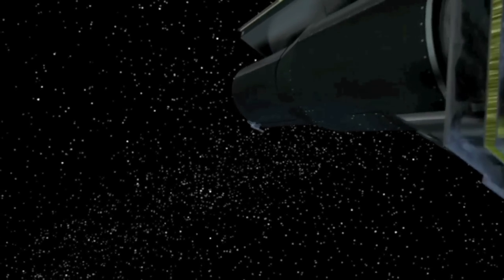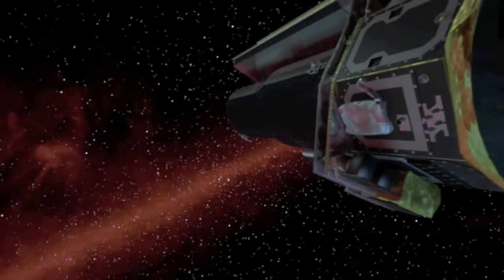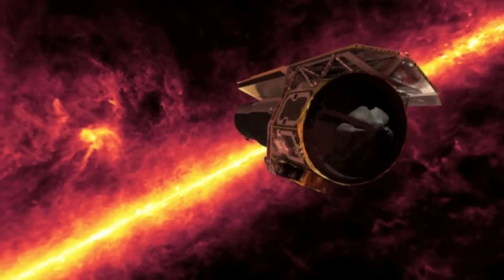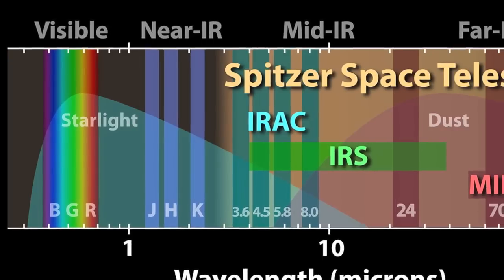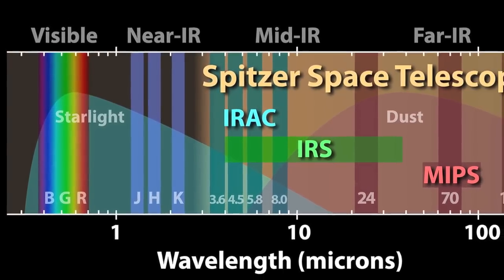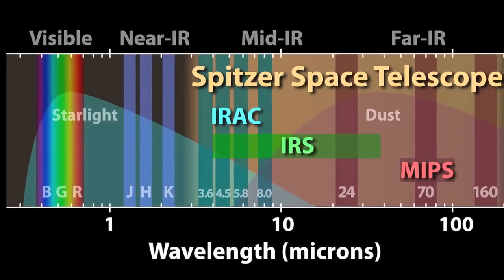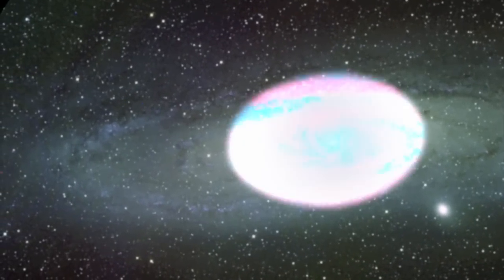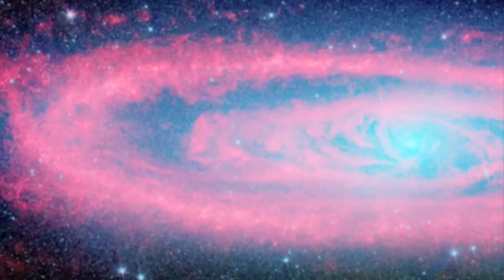The infrared part of the spectrum is home to light that we cannot see ourselves. This is the realm of heat, the radiation given off by smoldering grains of interstellar dust. The longer wavelengths of this light are not blocked by the gas and dust that are strewn throughout all galaxies. They pass right through, allowing the instruments aboard Spitzer to literally see through what would otherwise be an opaque curtain.